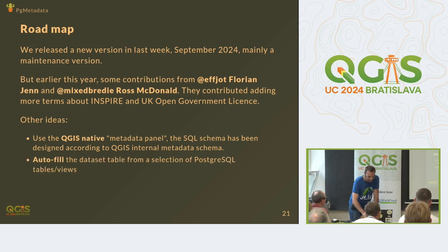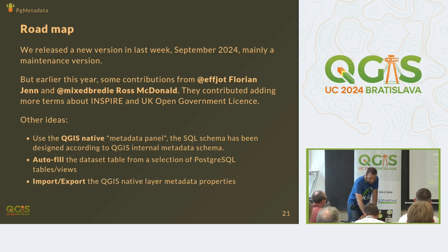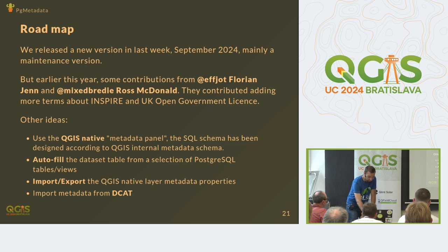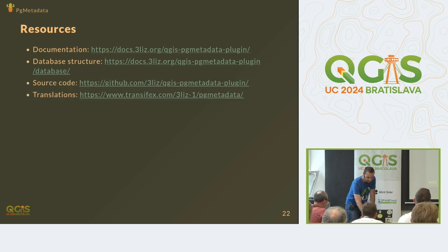We also want to add autofill — like how you can copy-paste and autofill many layers sharing the same contact. Import/export to the native layer metadata properties, and also import from a DCAT catalog. We can already export to DCAT, so why not import it as well? The links to the structure and everything are on GitHub, including translations.